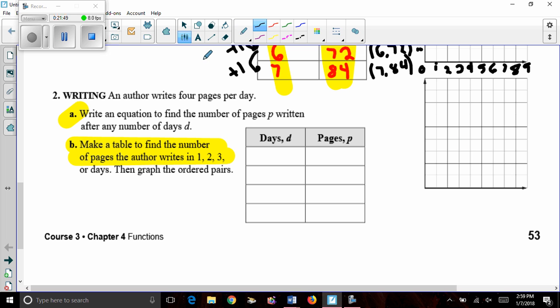All right, now for the answers. When I read, an author writes 4 pages per day. So that means I have 4 times something. Let's see what day it's supposed to represent. Write an equation to find the number of pages, P, written after any number of days, D. So day, which was up here, is D. So I'm going to have 4 times D. 4 times D will tell us how many pages are being written in a day. Therefore, P equals 4 times D. So that's the very first part, first answer.